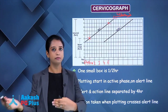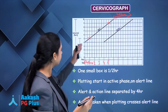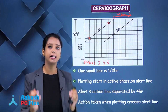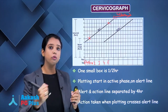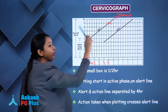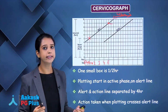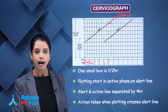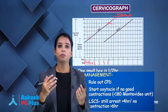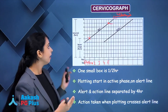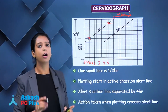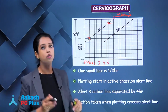Normal dilatation is 1.5 cm/hr in multipara and 1.2 cm/hr in primigravida, but for ease, the partogram uses 1 centimetre per hour as the minimum. As soon as the rate drops below 1 cm/hr, the plotting crosses the alert line, meaning intervention is needed — either shift the patient to a better centre or rule out CPD, check contractions, start oxytocin. After 4 more hours, if plotting still crosses the action line, perform LSCS.